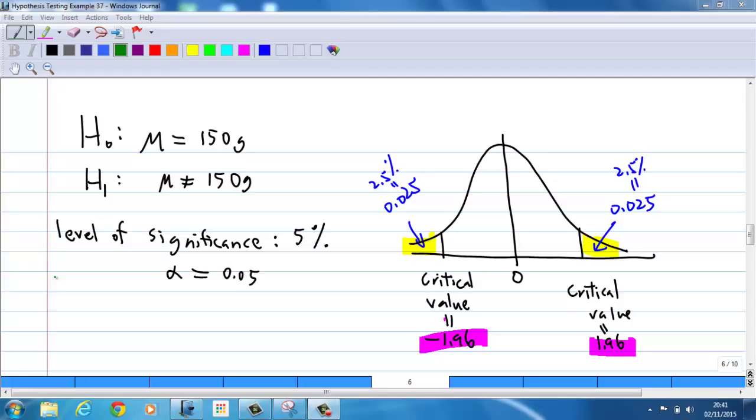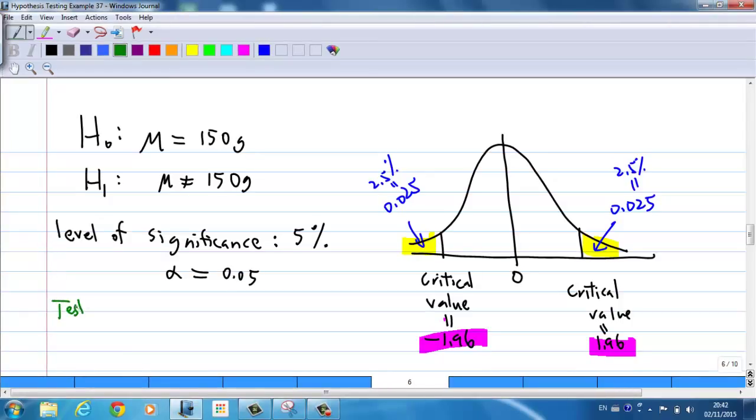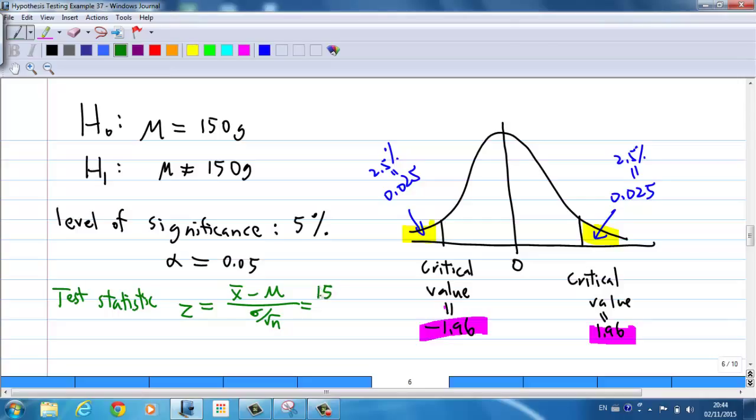Coming back to look at the test statistic. This is z equal to x-bar minus mu over sigma over square root of n. x-bar is 152.5, mu is 150, sigma equal to 5, and n is 25, equal to 2.5.